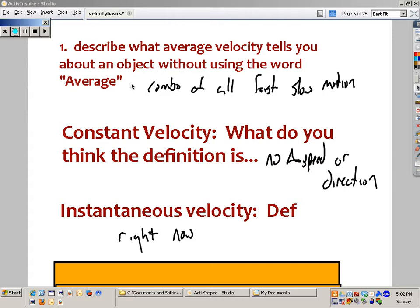Average velocity is a combination of all the fast and slow motion. Constant velocity means there's no change in speed or direction. A triangle means change. Instantaneous velocity, well, that just means how fast are you going right now.